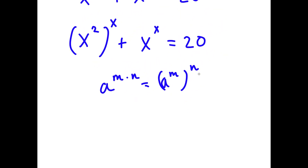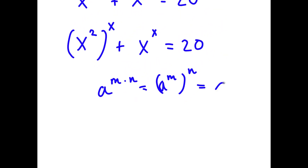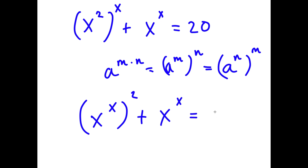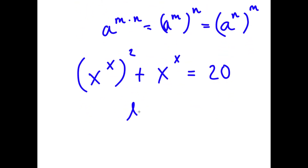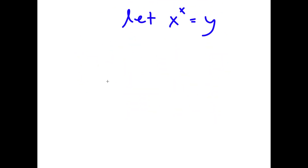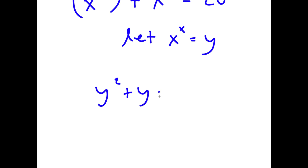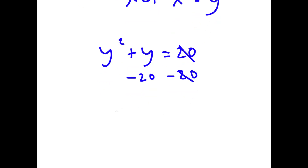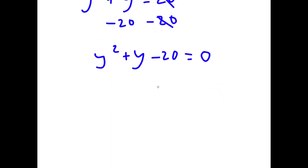Using that rule, x to the power of 2 to the power of x is the same as x to the power of x to the power of 2. Now I'm going to let x to the power of x equal the variable y. So I have y squared plus y is equal to 20. Subtracting 20 from both sides gives y squared plus y minus 20 equals 0.